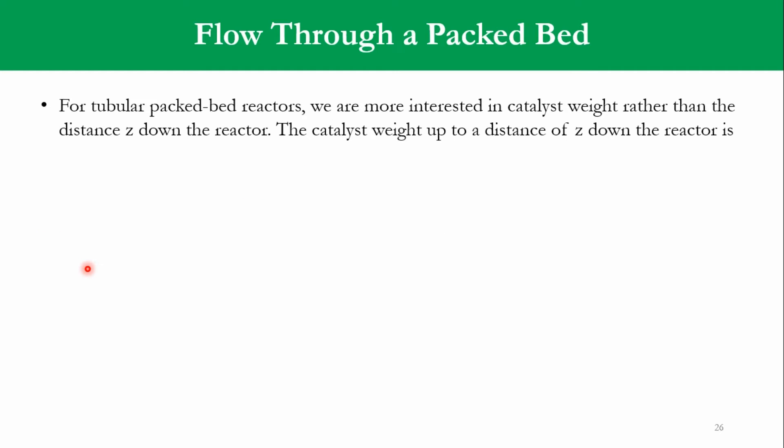For tubular packed bed reactors, we are most interested in the catalyst weight rather than the distance down the reactor, which is Z. Accordingly, we have developed the previous equation in terms of dZ. Now, we want it in terms of W, as we have seen our task. So, we know that W, which is the catalyst weight, is equal to 1-φ Ac, which is the cross-sectional area Z, which is the length into ρc. ρc is the density of solid catalyst, this is the volume of solids, because 1-φ, if we say φ is porosity, while 1-φ will be opposite of it, and W will be the weight of catalyst.